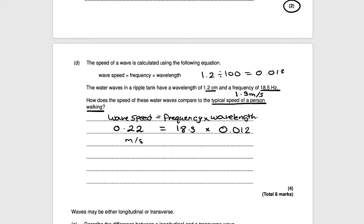Now the walking speed is 1.5 meters per second. Wave speed is 0.22 and walking speed is 1.5 meters per second. That tells you that the wave speed is slower than a typical walking speed. So the wave speed is slower. That would get you 4 marks.